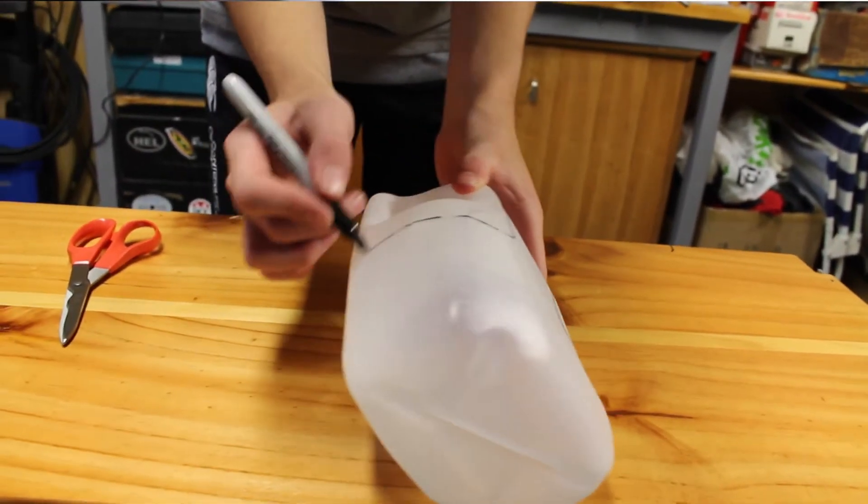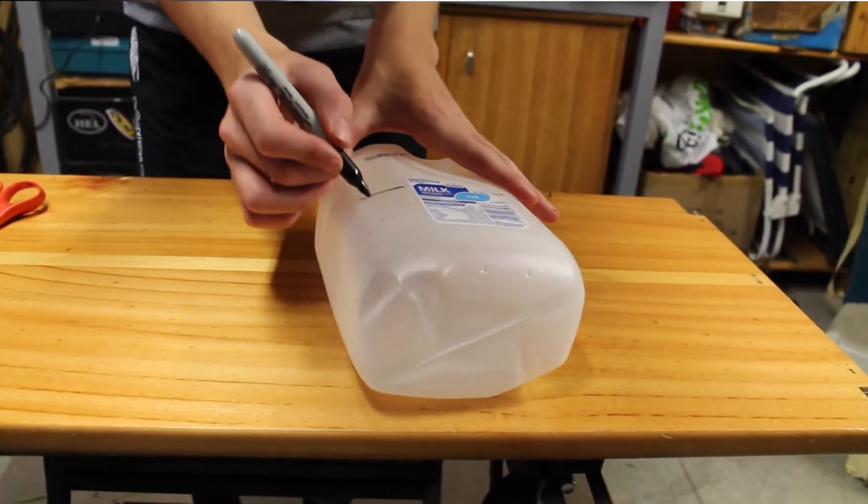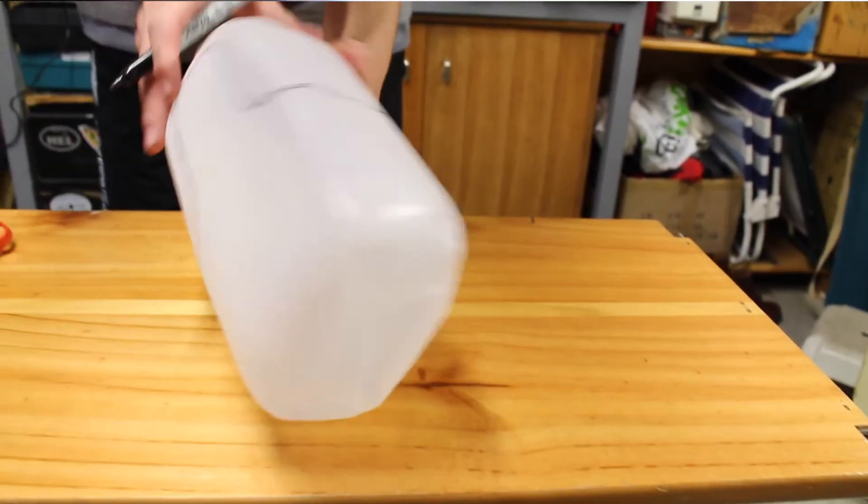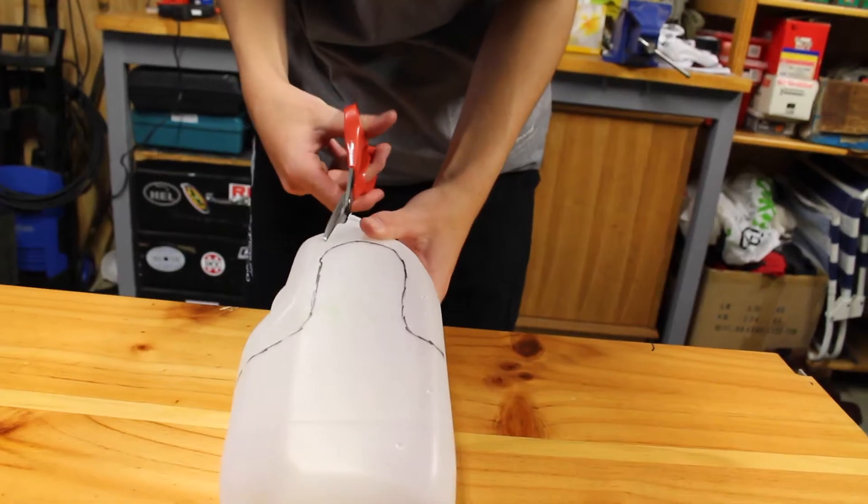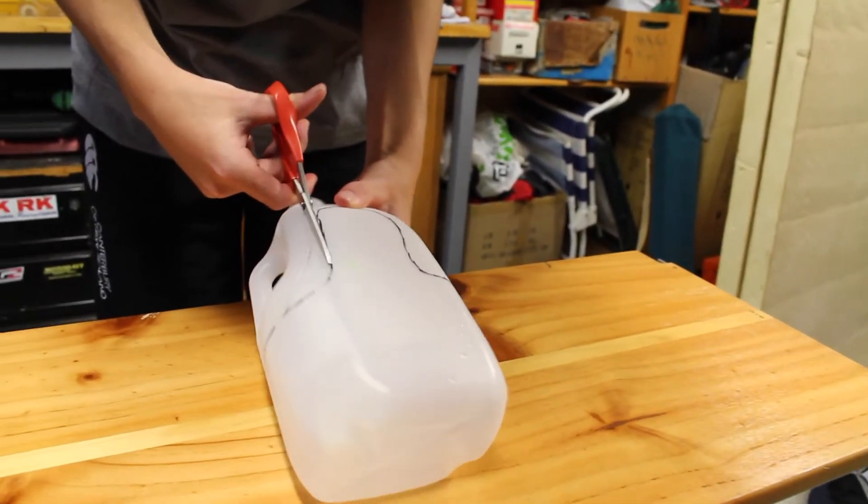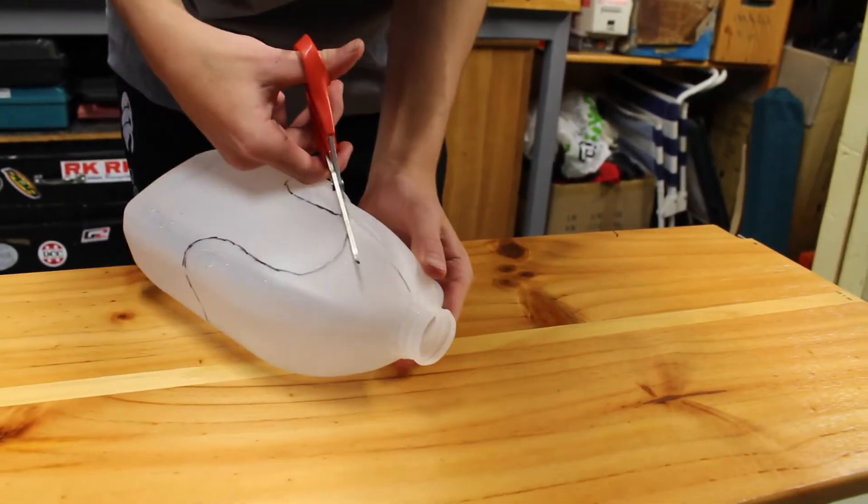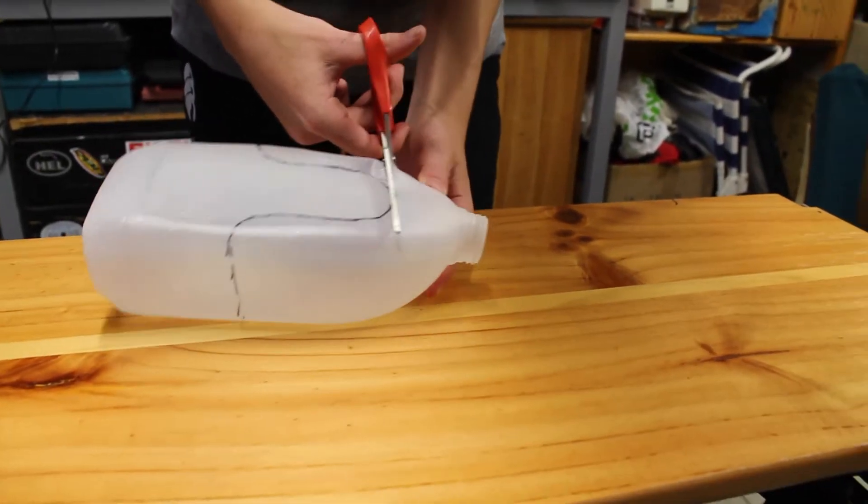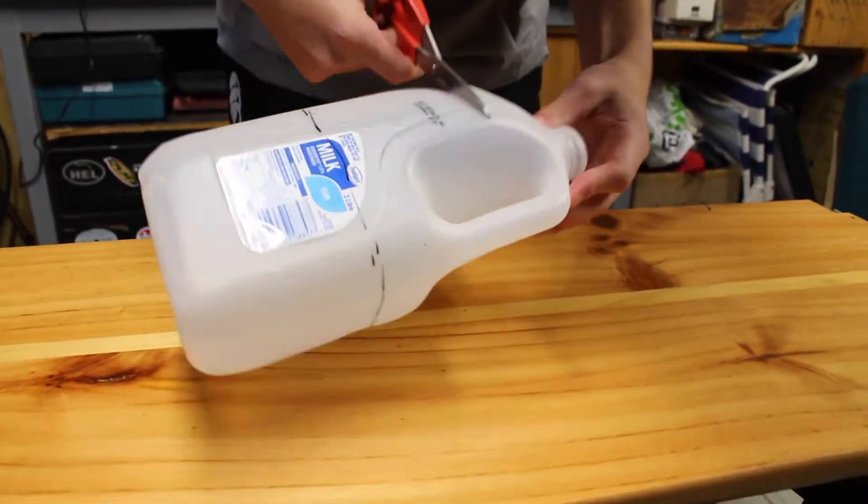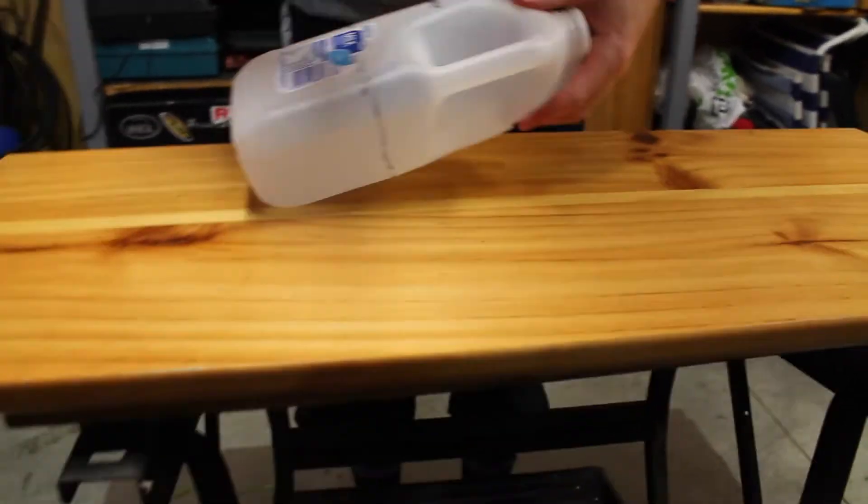Alright guys, so once you've traced that should be a cool shape. And now what you want to do is cut that out. Alright, so you just want to chop off the top so that it's easier to cut around the outside.